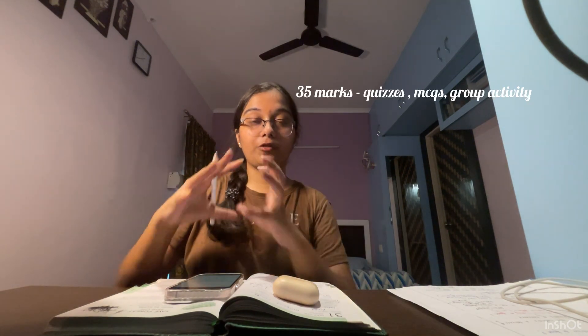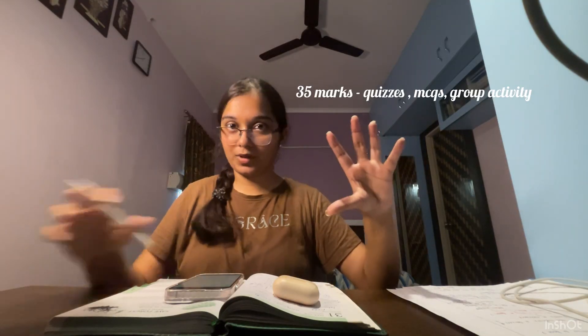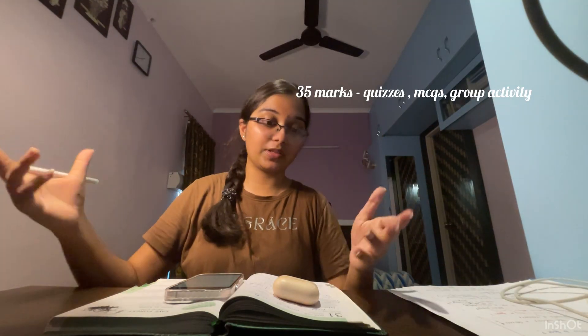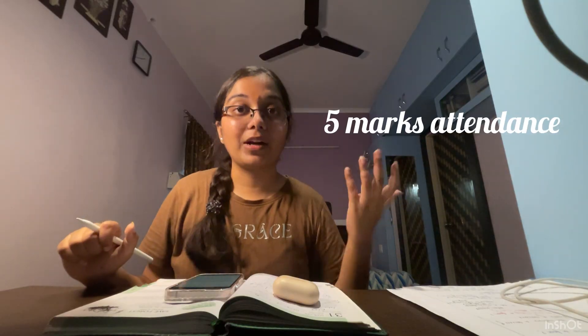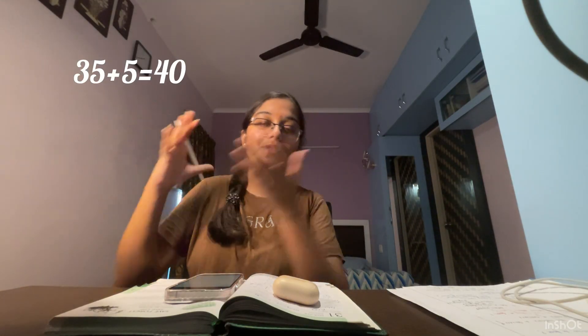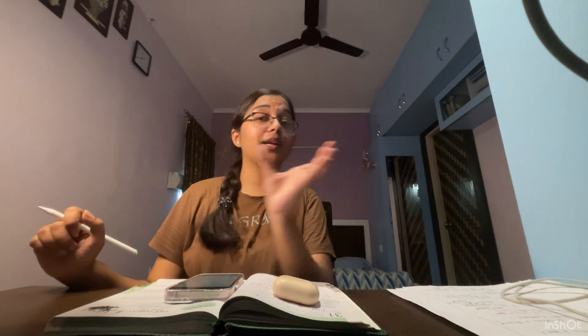For the continuous assessment part — worth 40 marks — professors can conduct quizzes, Google Classroom activities, group discussions, or anything they choose. The professor takes activities totaling 35 marks, such as a 5-mark quiz or a 15-mark group discussion, and the remaining 5 marks are the professor's attendance component. So 35 + 5 = 40 marks for continuous assessment.